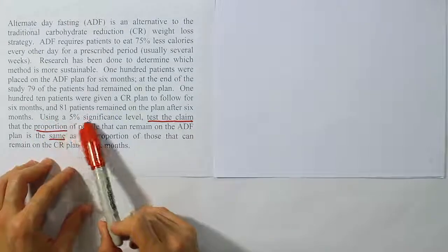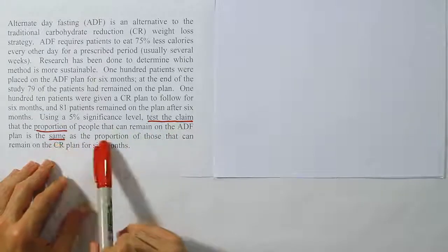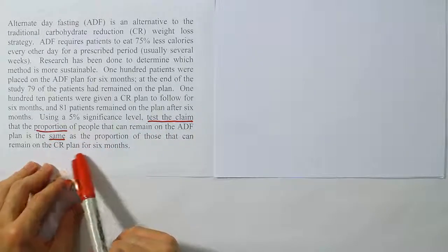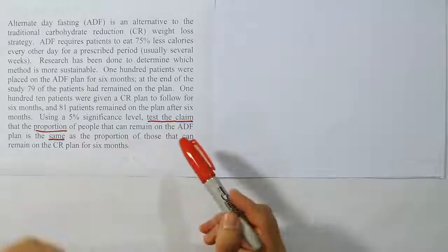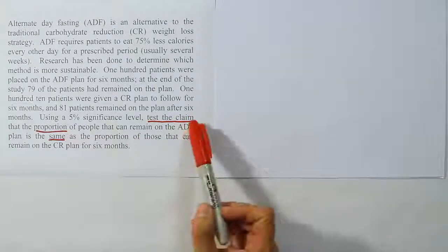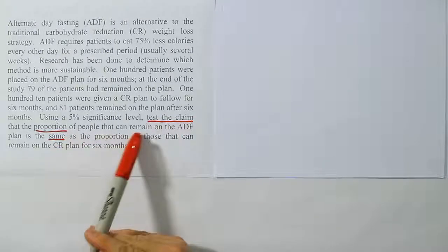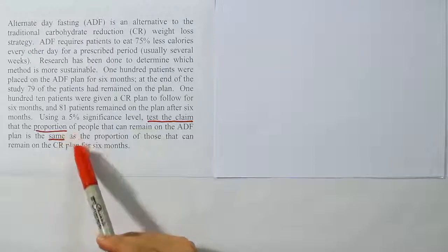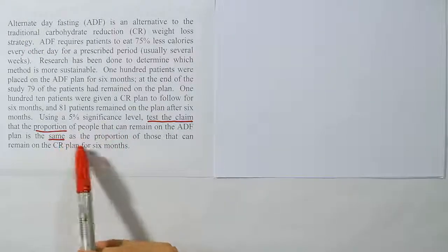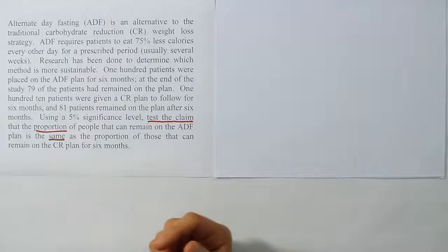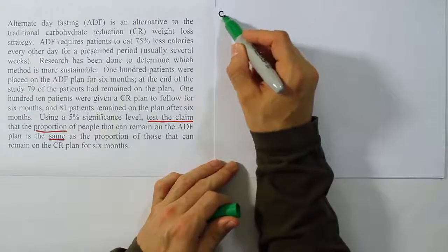Using a 5% significance level, test the claim that the proportion of people that can remain on the ADF plan is the same as the proportion of those that can remain on the CR plan for six months. I've underlined the phrase test the claim because that tells us it's a hypothesis test. I've underlined the phrase proportion to tell us that it's a hypothesis test about the proportion, and I've underlined the word same because it's saying that the two groups have the same proportion.